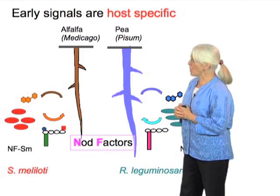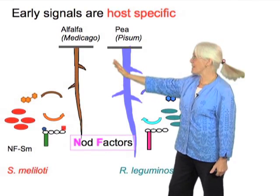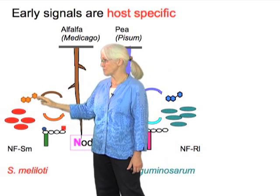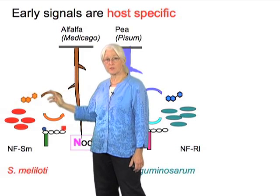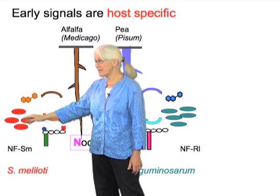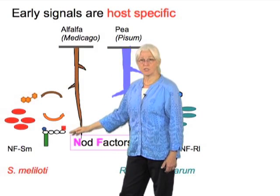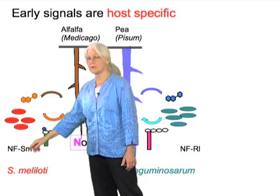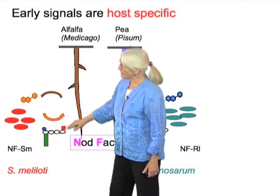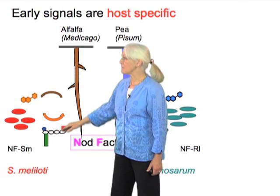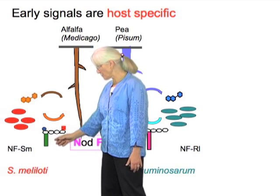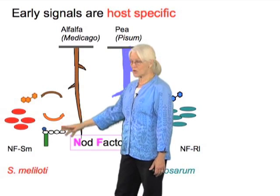In the case shown on the left, we're looking at alfalfa, Medicago sativa. This plant produces a molecule shown in yellow here — you'll see the structure in a moment. That signal from the plant to the bacterium triggers gene expression, resulting in the production of a nod factor called NFSM — the nod factor from Sinorhizobia meliloti. It has a backbone of N-acetylglucosamines, modified with a 16-carbon N-acyl substitution, an acetyl, and a sulfate, each shown by a color code.